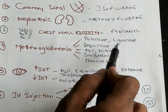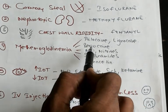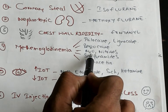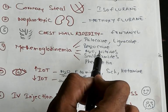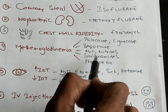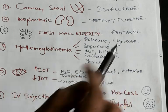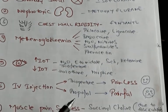The drugs leading to methemoglobinemia are: prilocaine, lignocaine, benzocaine, nitrous oxide, nitrites, sulfonamides, and phenacetin — these need to be remembered.